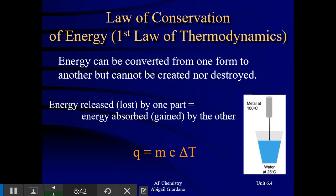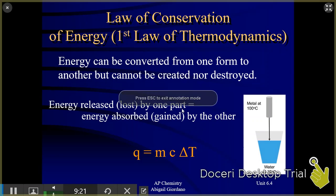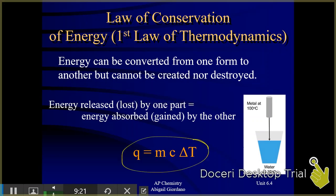There is a formula on your equation sheet — we call it the MCAT equation. q is heat, m is mass, lowercase c is specific heat capacity, and delta T is the change in temperature. We always do final minus initial. Sometimes you'll have questions that are really simple, where you're doing nothing more than plugging values into that equation.